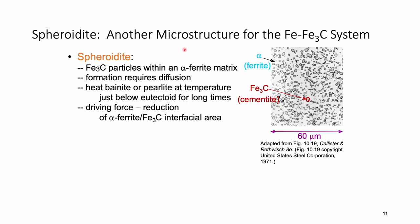Spheroidite is another microstructure in the Fe-Fe3C system. Again there are two phases: ferrite alpha phase plus cementite. The shape of the cementite becomes like particles. The driving force for spheroidite is the reduction of interfacial area between alpha ferrite and cementite. To get spheroidite, you need to anneal the material — from either pearlite or bainite structure — at a relatively high temperature but below Te.